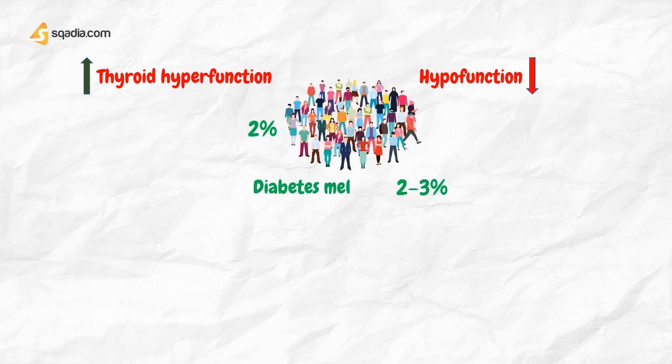Thyroid hyperfunction and hypofunction occur in about 2% of the population and, together with diabetes mellitus, are the most common endocrine disorders, affecting 2–3% of the population.